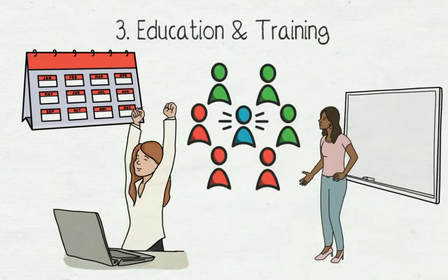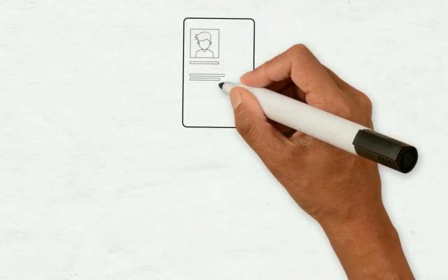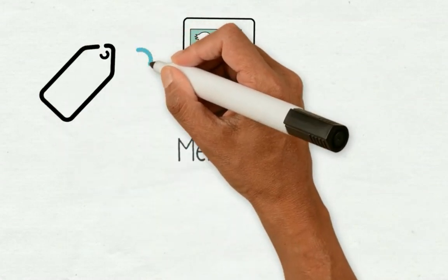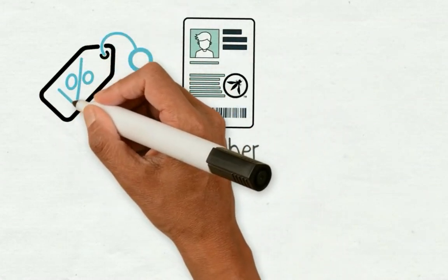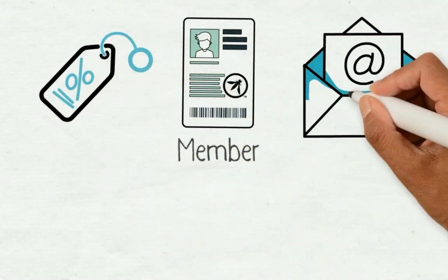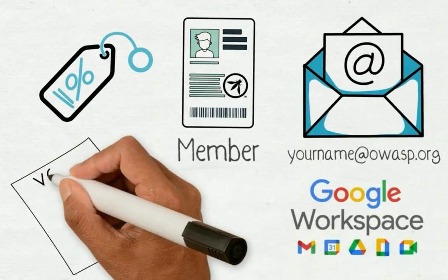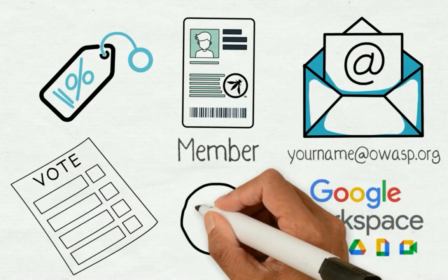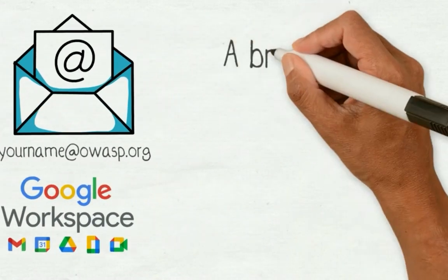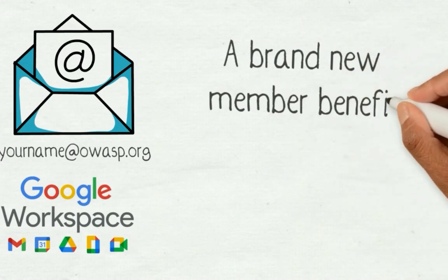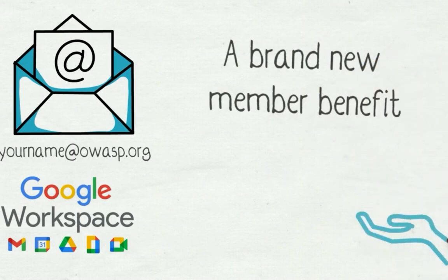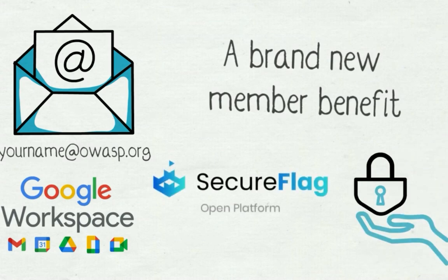One of the many ways you can get involved is to become a member. The membership benefits include discounts for events and trainings, your own OWASP email address, Google Workspace access, and a vote in our OWASP Global Board elections. Recently, OWASP added a brand new member benefit: access to hands-on application security training through the OWASP SecureFlag open platform.